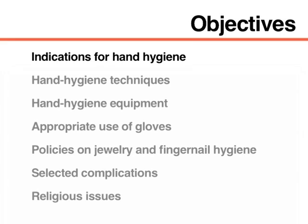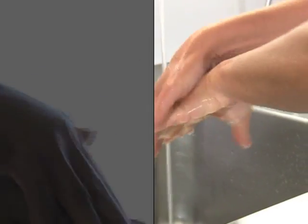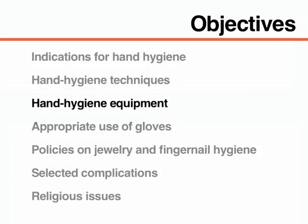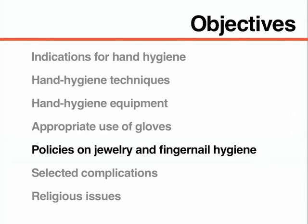This video will demonstrate the various indications to perform hand hygiene as well as two different hand hygiene techniques: hand rubbing with an alcohol-based hand rub formulation and hand washing with soap and water. This video will also review hand hygiene equipment, the appropriate use of gloves, and policies on jewelry and fingernail hygiene.